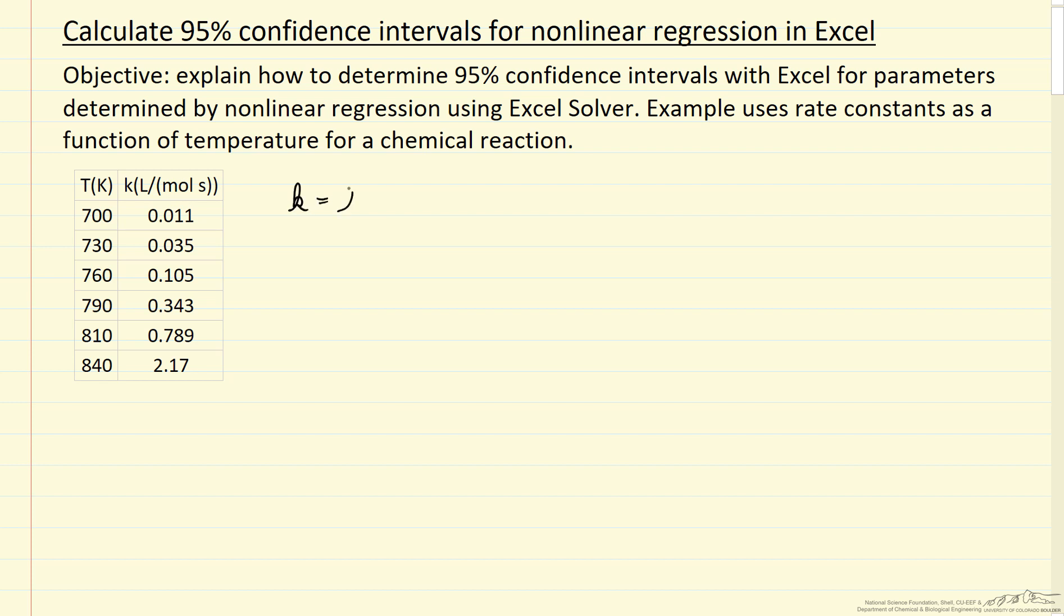We're fitting the data to the form K0, an exponential E activation energy, R gas constant, 1 over absolute temperature minus 1 over T0. R is the gas constant, in this case we're going to use 8.314 joules per mole Kelvin. And T0 is the temperature halfway in the range between 700 and 840, so that happens to be 770 Kelvin.